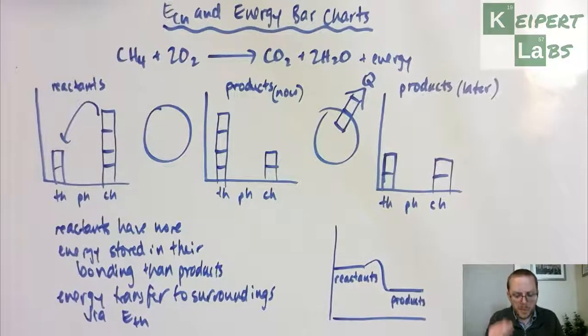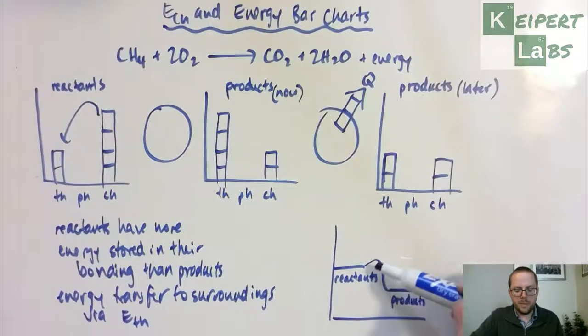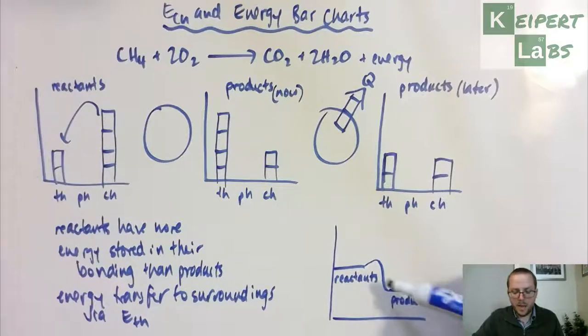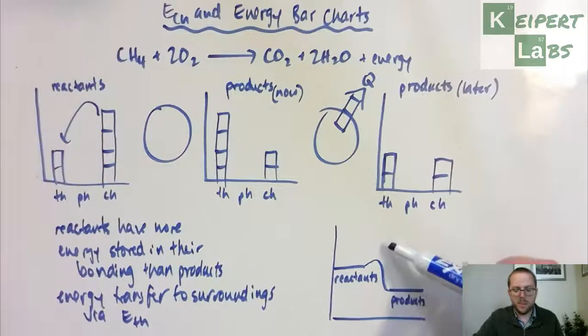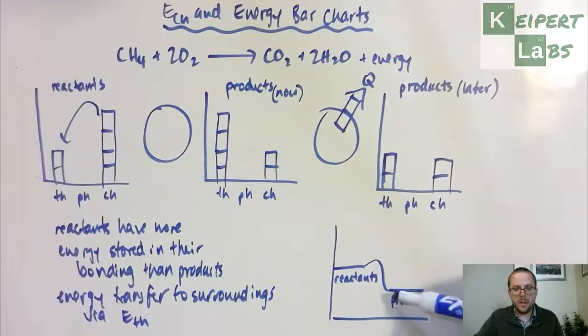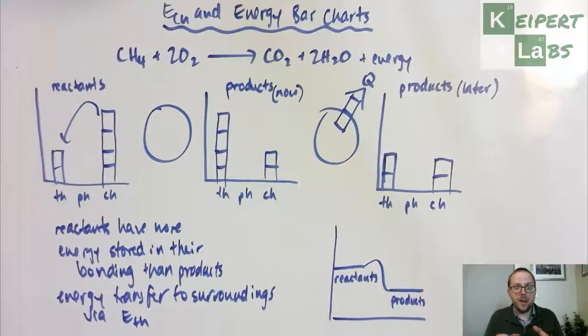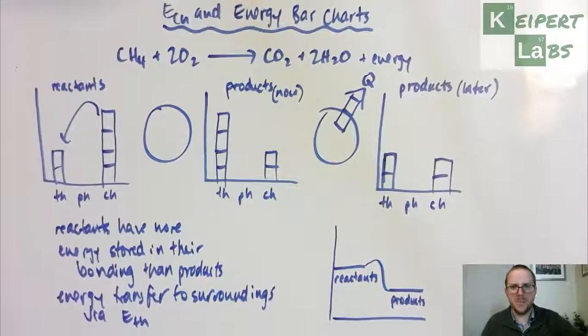But in terms of getting to this idea of how much energy is being used in the bonding within the particle, and that we need to break all the bonds first before we can make new ones and that energy is involved in breaking all the bonds to begin with. But then depending on whether we have more stored in the products or less stored in the products dictates whether energy, the net energy change is into the system or out of it to the surroundings. Thanks very much for watching. Bye for now.